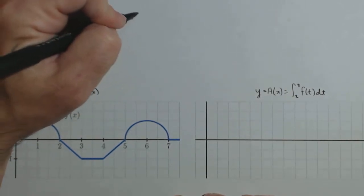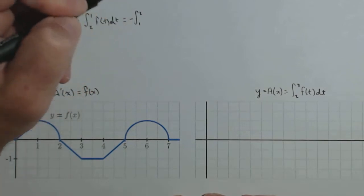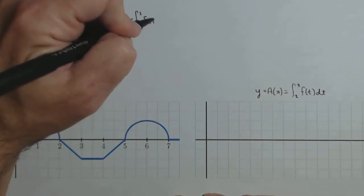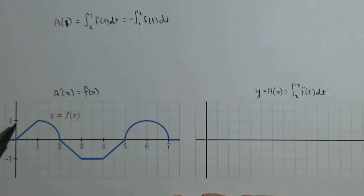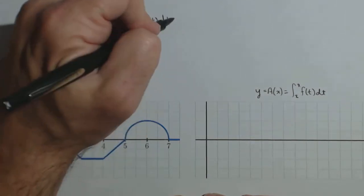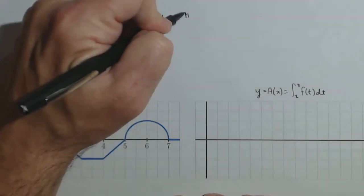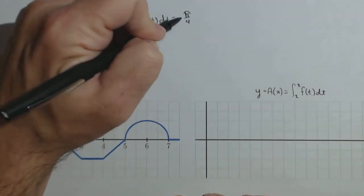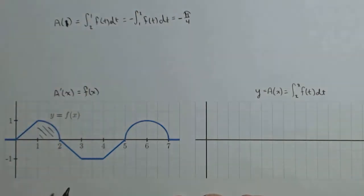Now what we'll do is first we'll switch the limits, so we're actually going to do 1 to 2 of f(t)dt. So that's the area right here. We have a quarter circle of area pi over 4, but notice we had to make it negative to flip our limits. So it's negative pi over 4 is a(1).